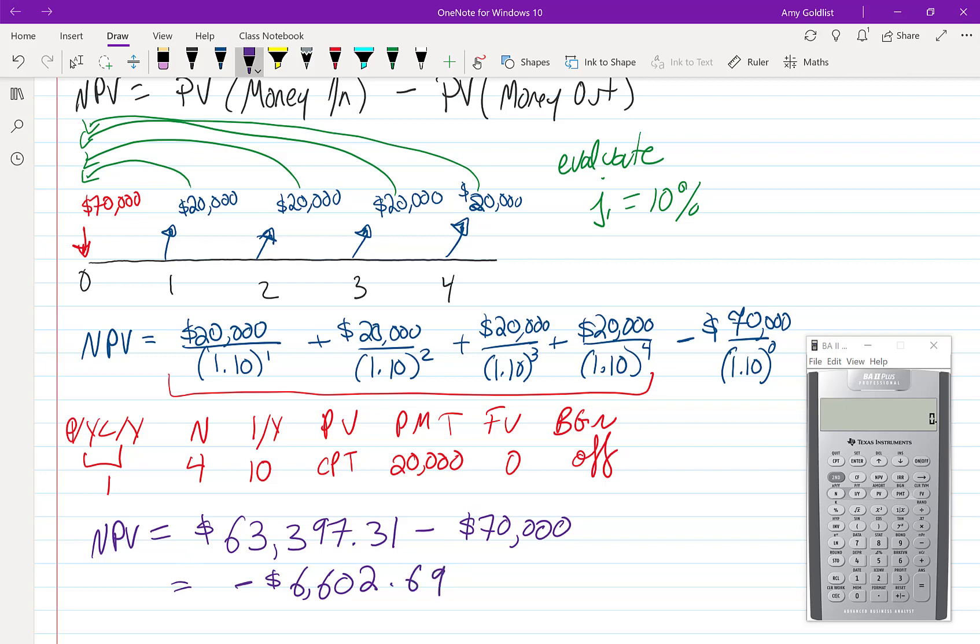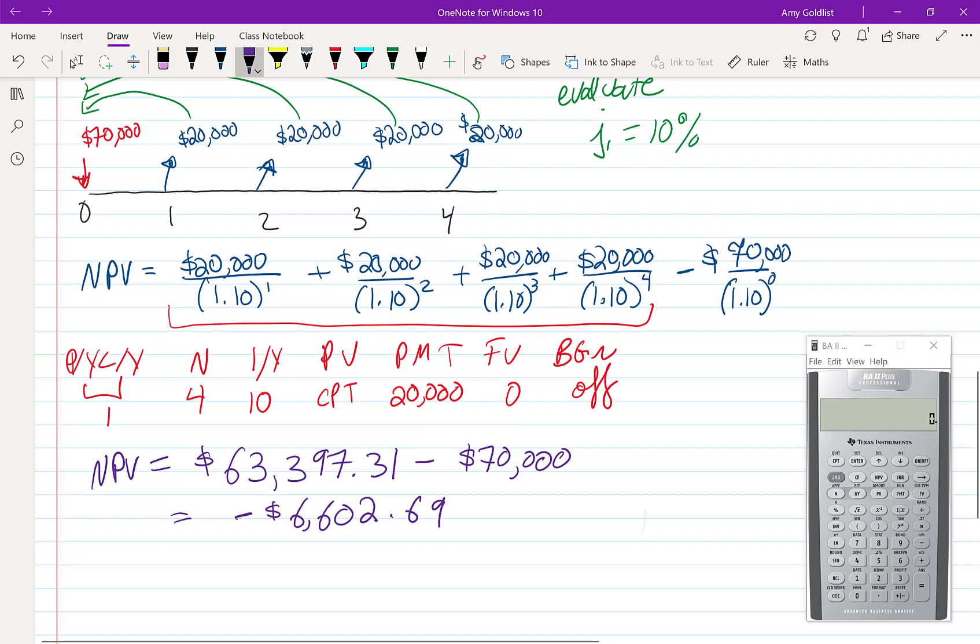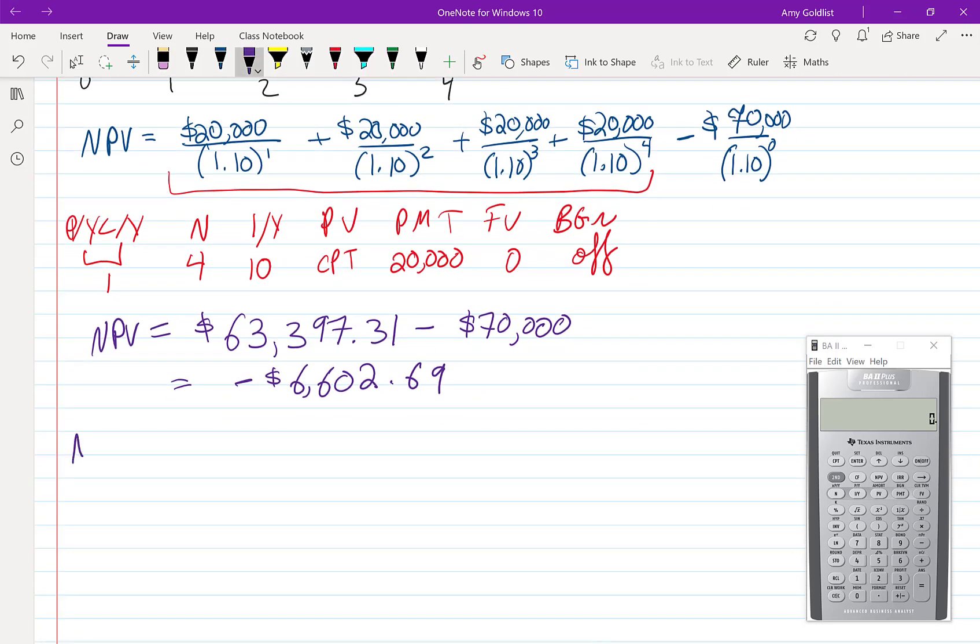A negative number. You should look at that and say, hey, I don't want negative values. That means at 10% interest, we are not making a profit. So I'm going to just say positive is good.